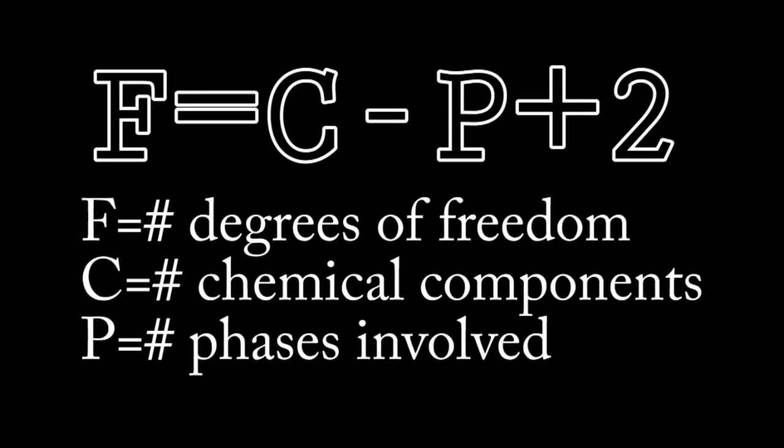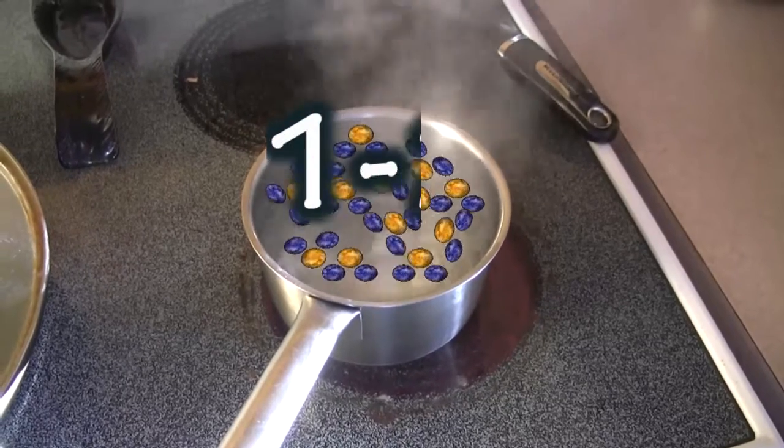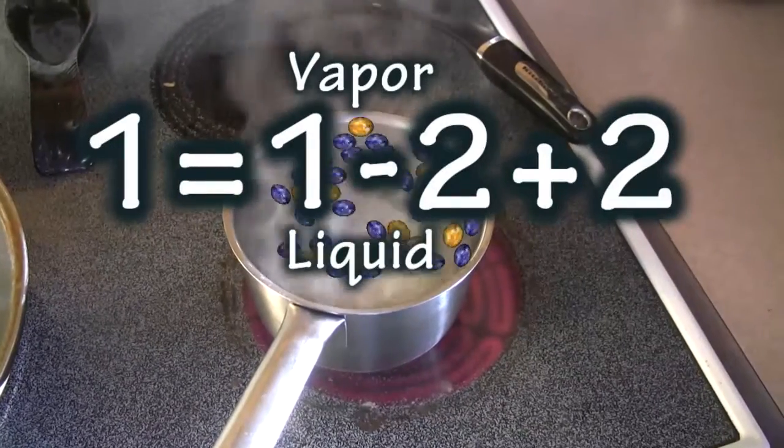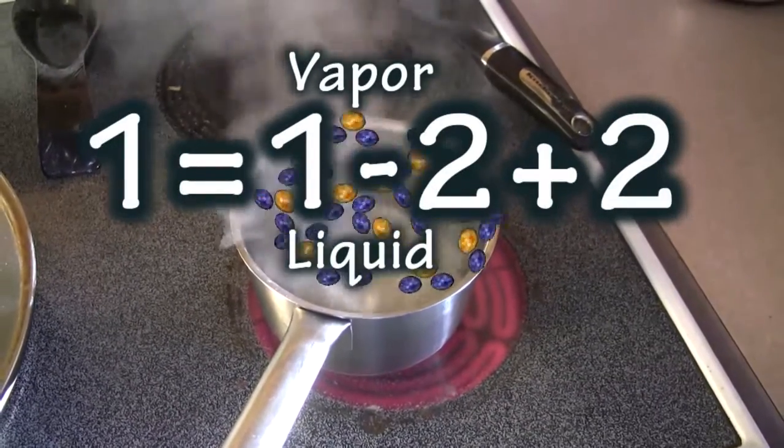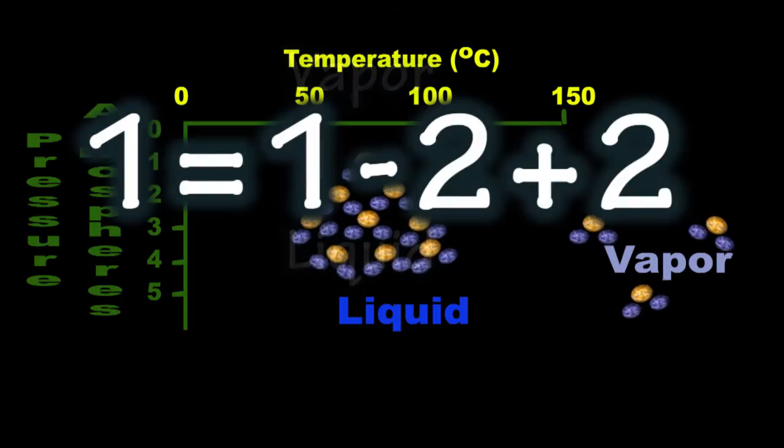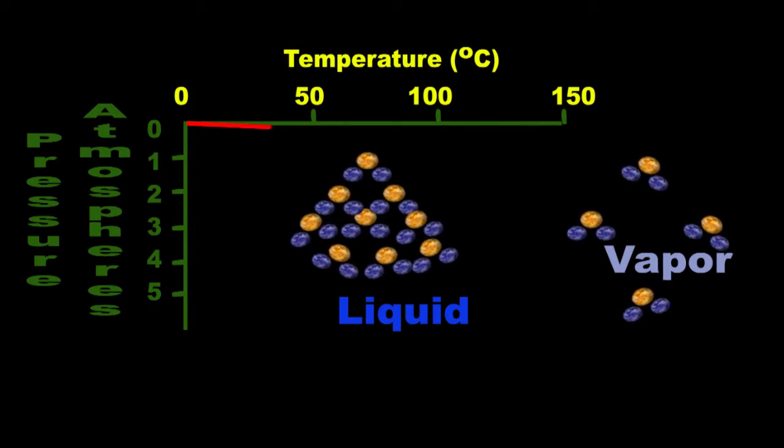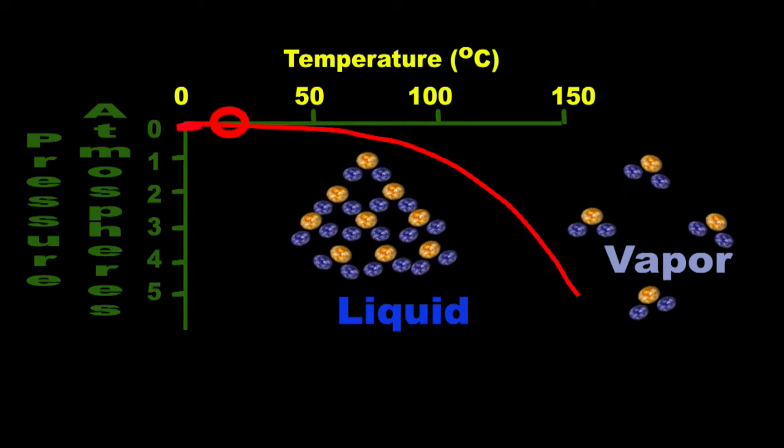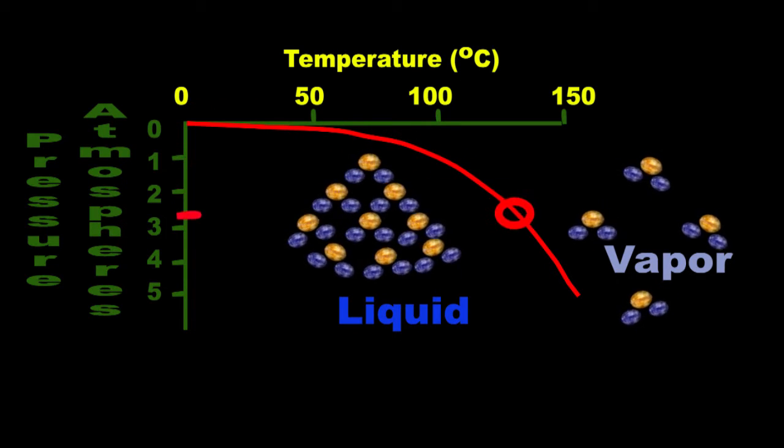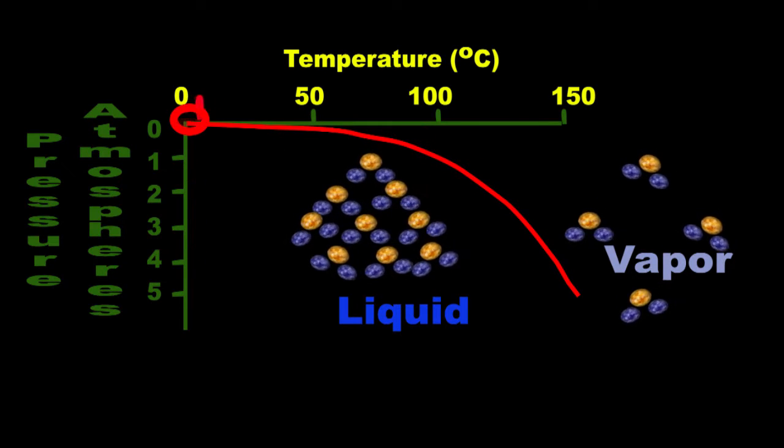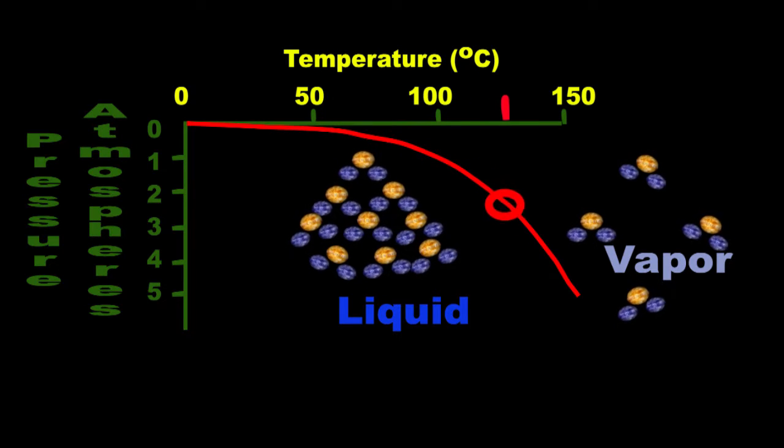Our system of water turning to steam, or vice versa, has one component minus two phases plus 2 to equal 1 degree of freedom. Let's explore each variable in the phase rule to get a deeper understanding. What do we mean when we say boiling water has one degree of freedom? It means we can have only one variable that we can independently vary, and then all other aspects of the system are dependent on that one single independent variable.